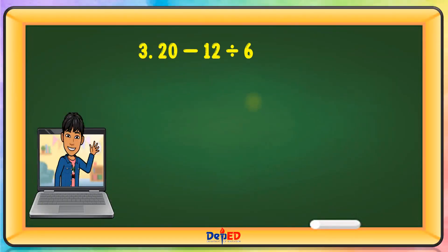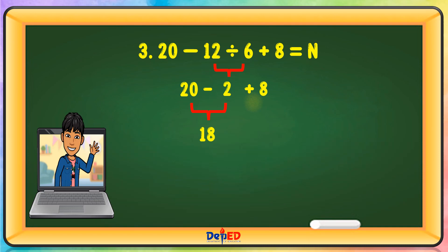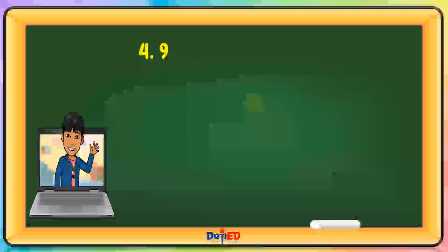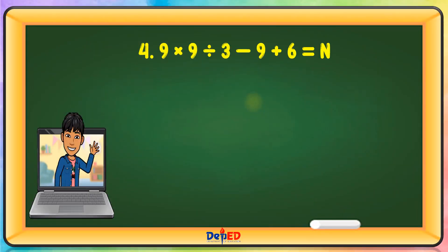Next problem: 20 − 12 ÷ 6 + 8 = N. Let us first divide: 12 ÷ 6 = 2. Then 20 − 2 + 8: subtract first, 20 − 2 = 18, then 18 + 8 = 26. N is equal to 26. Next problem: 9 × 9 ÷ 3 − 9 + 6 = N.